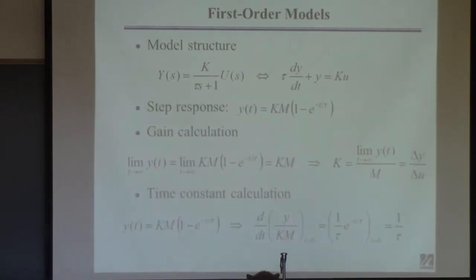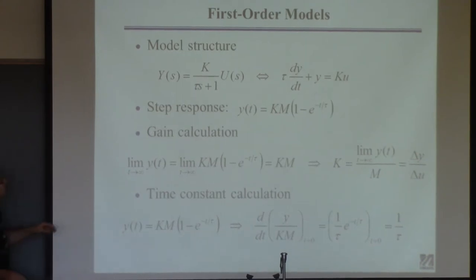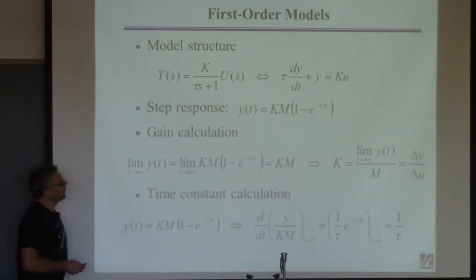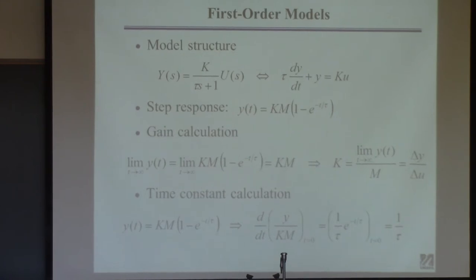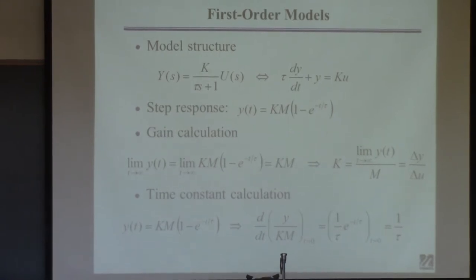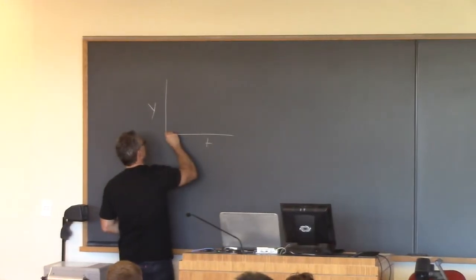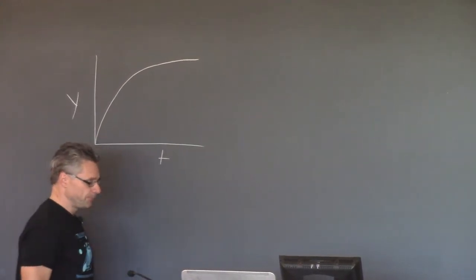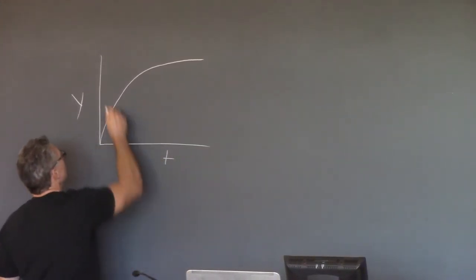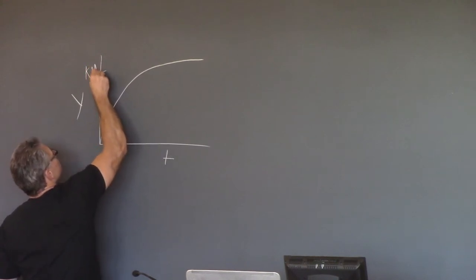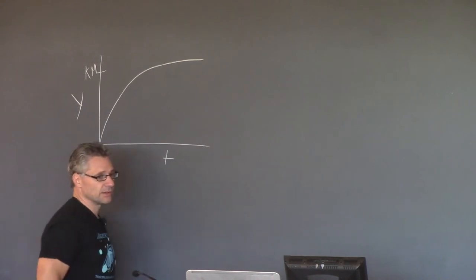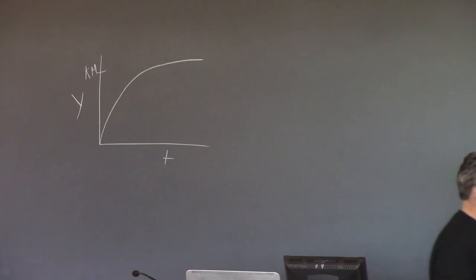Last time we went through a first-order system. The idea is that we know a first-order system exhibits a response to a step input change that looks like a characteristic curve. If we saw a response that looks like that in our data, we'd be tempted to fit a model to the data that looks like a first-order transfer function.